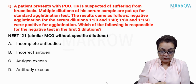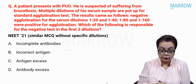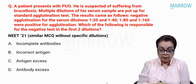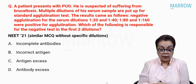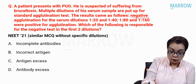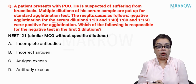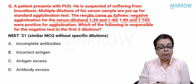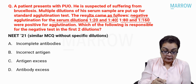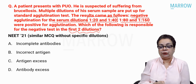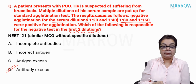A patient presents with pyrexia of unknown origin. He's suspected of suffering from brucellosis. Multiple dilutions of his serum sample are put up for standard agglutination test. The results showed negative agglutination for serum dilutions 1:20 and 1:40, while 1:80 and 1:160 were positive for agglutination. Which of the following is responsible for the negative test in the first two dilutions?